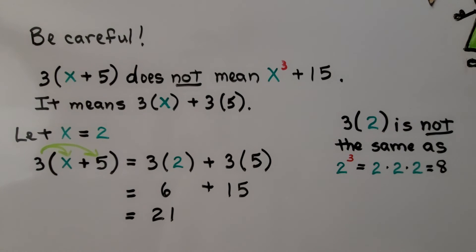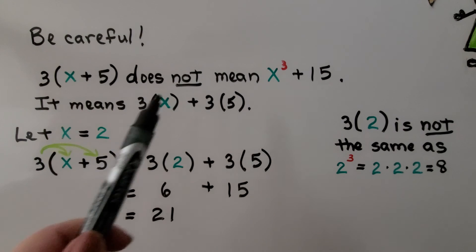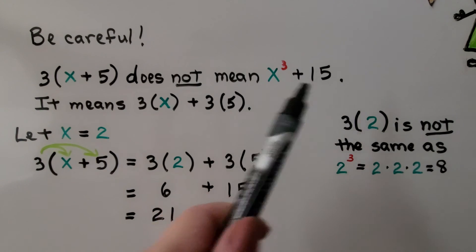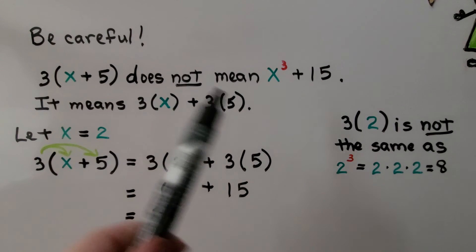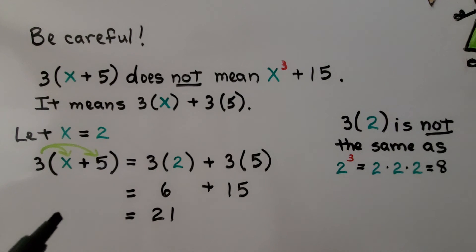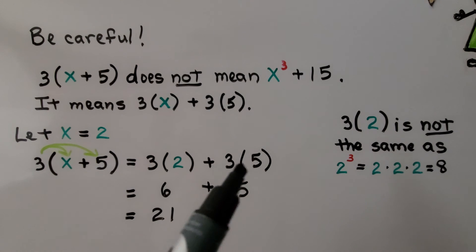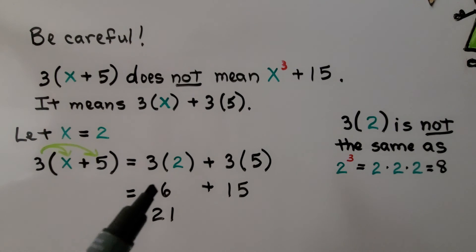Be very careful. 3(x + 5) does not mean x raised to the third power plus fifteen. If x was equal to two, we would write 3(2) + 3(5). That would give us six plus fifteen, which is equal to twenty-one.